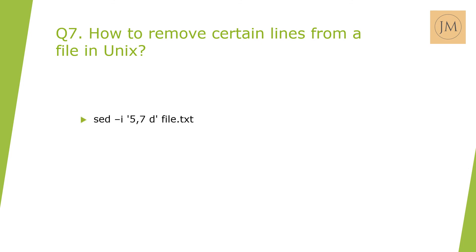Next question: How to remove certain lines from a file in Unix? Suppose we want to remove the fifth and seventh lines. The answer is: `sed -i '5,7d' file.txt`. The line numbers 5 and 7 specify the range, 'd' represents delete or remove, and `-i` edits the file in place.